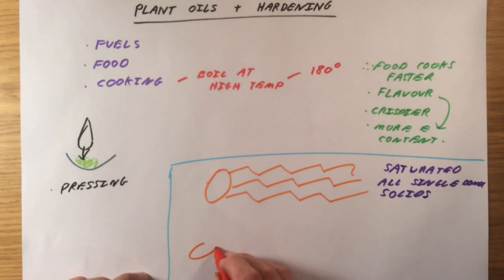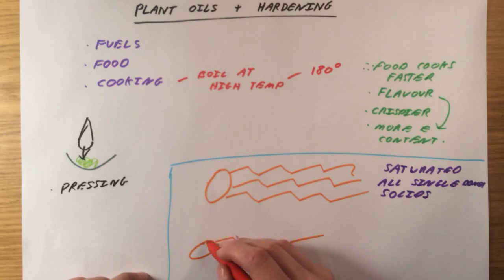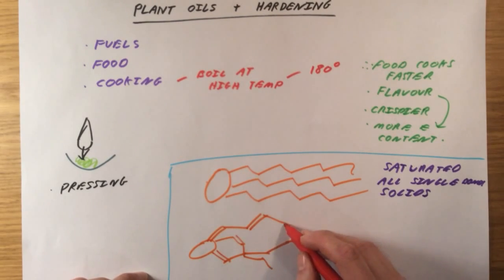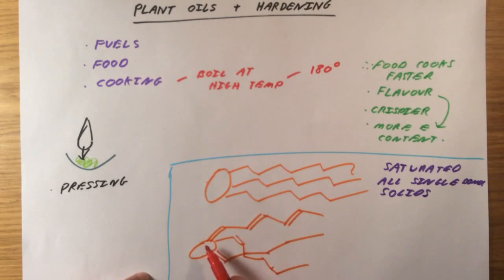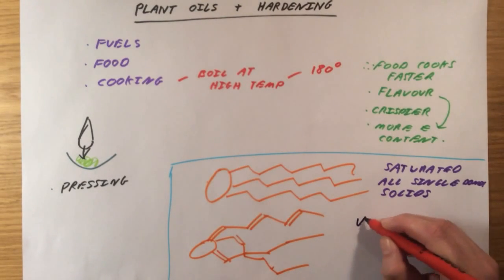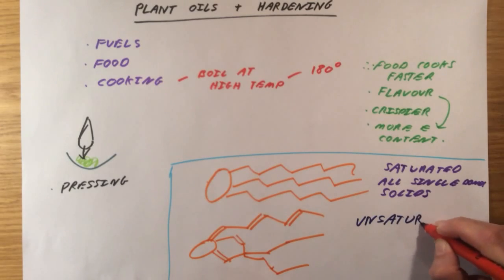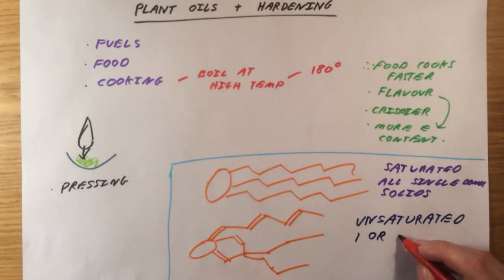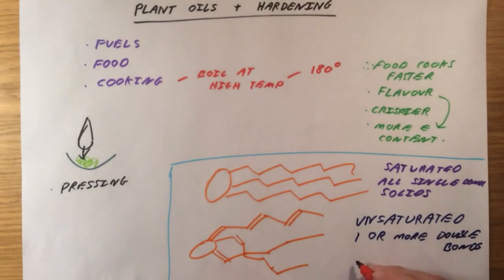With an unsaturated fat, what you actually get is double bonds in your carbon chains here. This would be a polyunsaturated fat, because it's got more than one double bond in it. But they tend to be quite irregular in how they're structured. And what that means is the molecules cannot line up in a regular arrangement, which actually means these are often liquids. So this would be an unsaturated fat, just like an alkene is an unsaturated compound. Unsaturated fats have got one or more double bonds. And they are generally, not always, but generally going to be liquids.